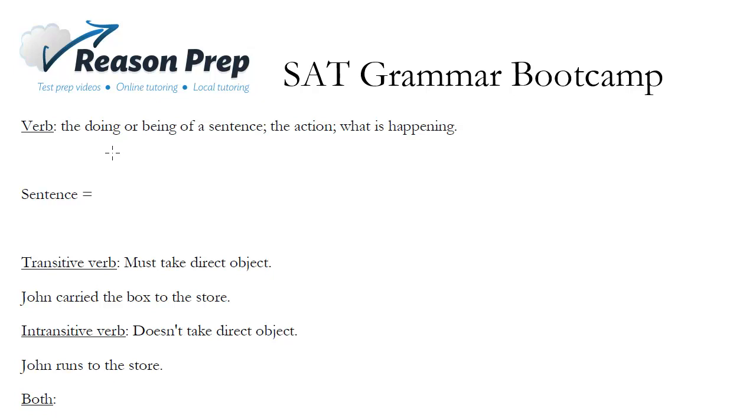So what is a verb? The verb is the doing or the being of a sentence, it's the action, it's what's happening. So if you have a sentence, you're going to have a subject, and then what's called the predicate, which is made up of the verb and other stuff. And this is a sentence, and in fact when you've got a subject and a main verb, you can actually call this a clause, and we're going to be talking about that a little bit more later.